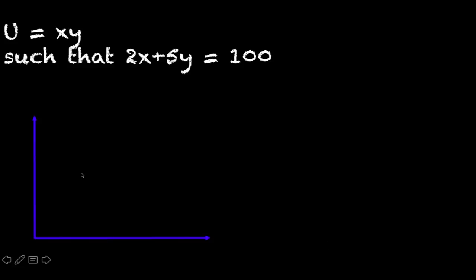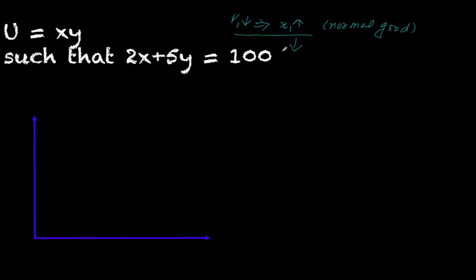Before I go on to the analysis, I want to focus on what price effect is, what substitution effect is, and what income effect is. What is price effect? When the price of a good changes — let's suppose when the price of good one falls — quantity rises for a normal good. Economists say this relation happens because of two hidden effects: substitution effect and income effect.